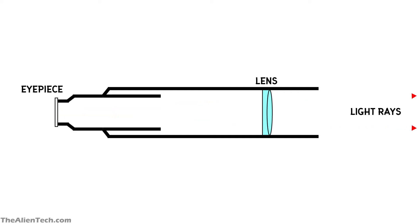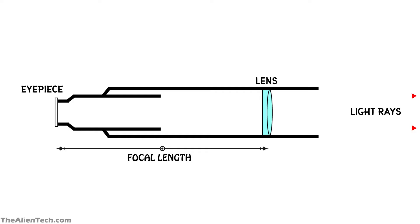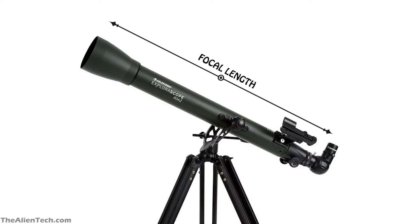The focal length is the distance between the entry point of light in the telescope and the exit point. You might be wondering — focal length is just the distance between the entry and exit point of light, so the focal length is just the length of the telescope tube.